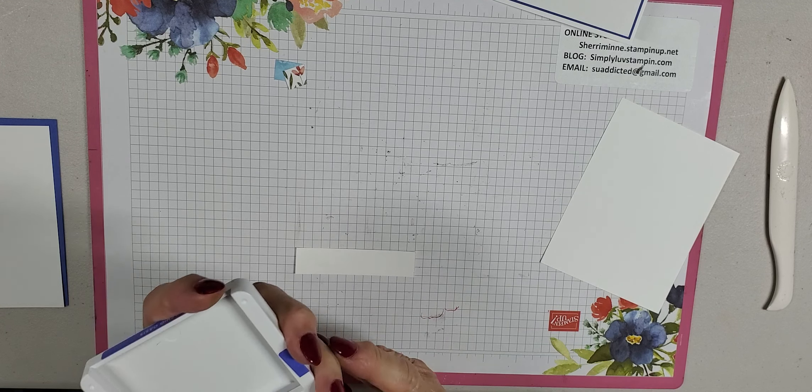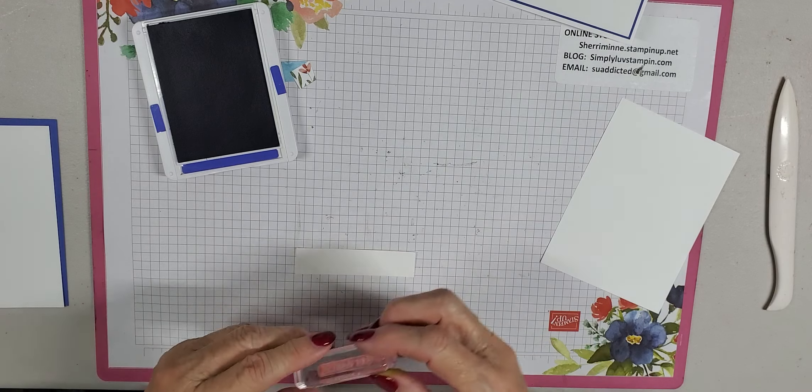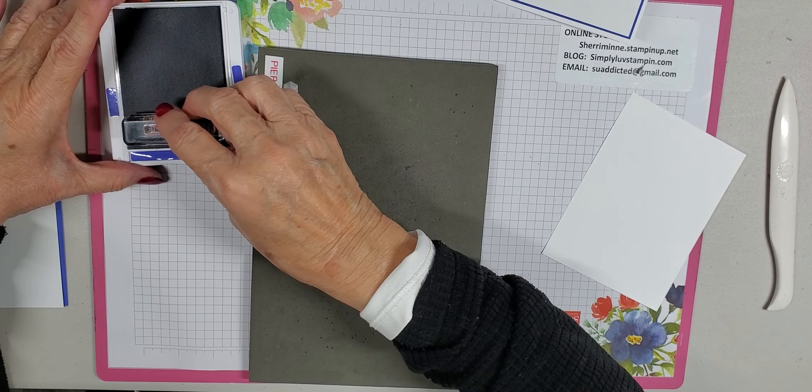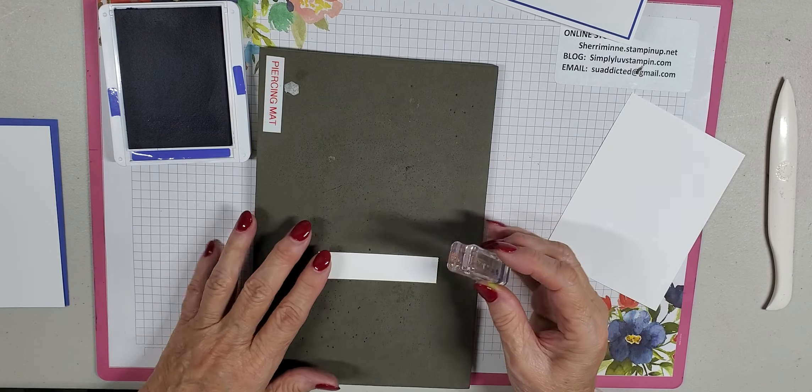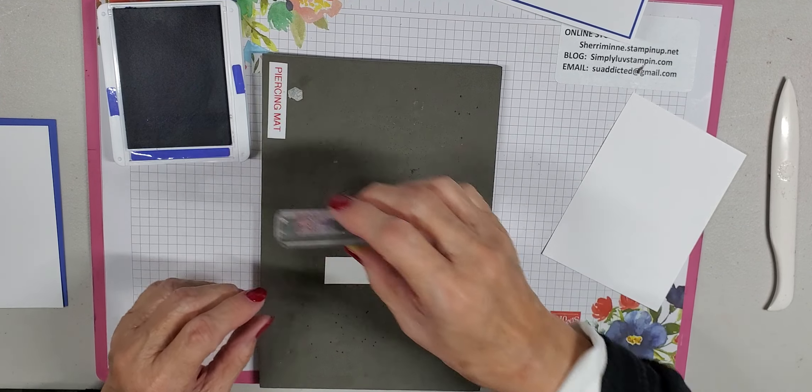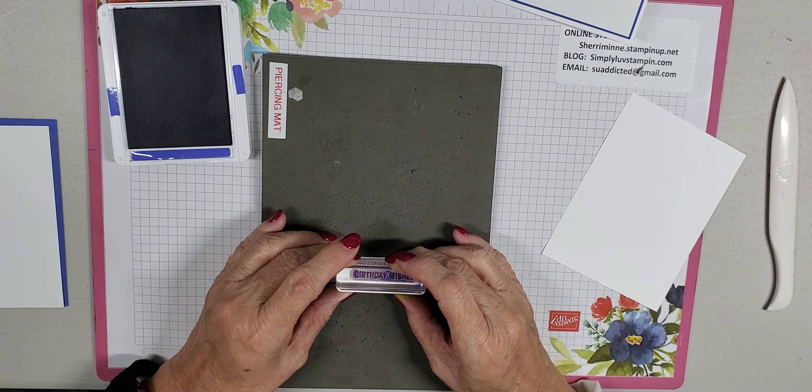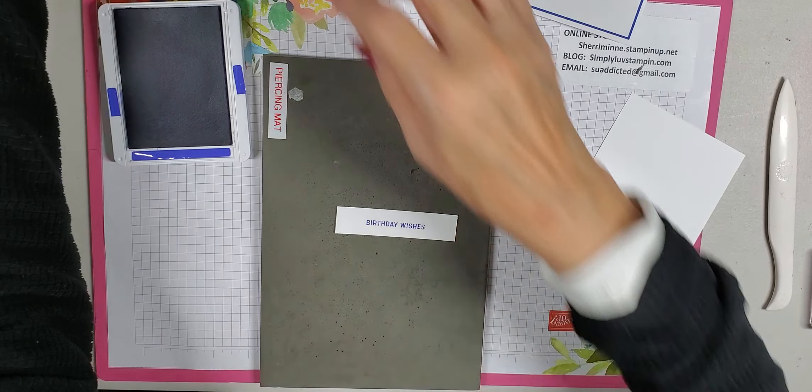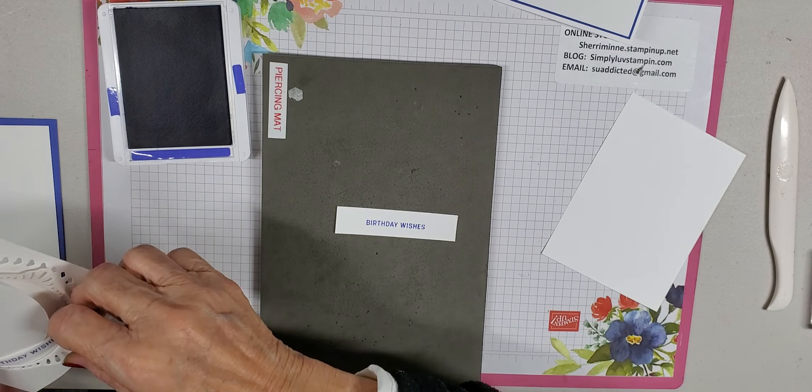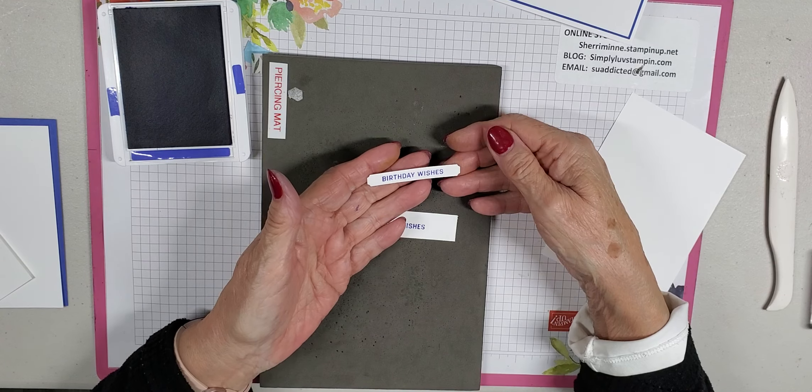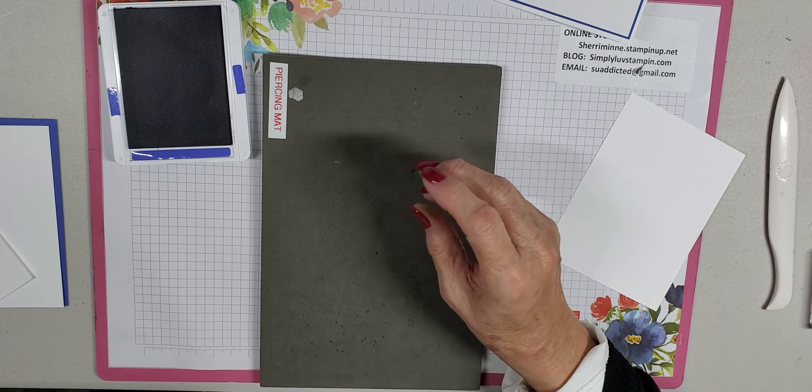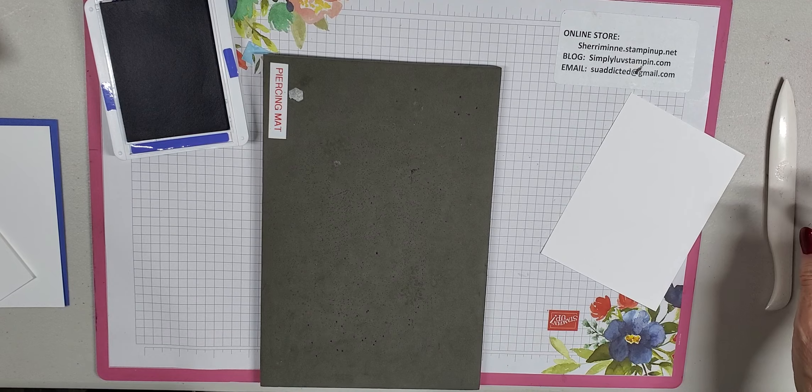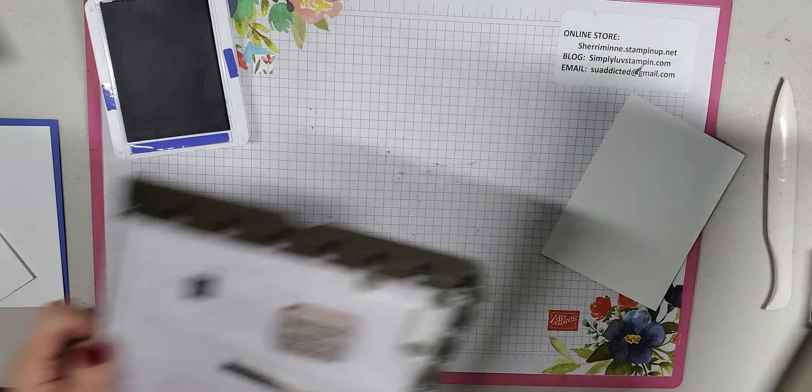And then I think what we'll do, we'll go ahead and work on our stamping. Get all our stamping done first. So first of all, we're going to take our Orchid Oasis. And that's what we're going to stamp our greeting on. And since this is a photopolymer stamp set, I'm using a little bit of an extra cushion under it. And we will get that stamped. And what's going to happen, you're going to take the framelit and cut it out, the little label framelit. And you'll end up with something that looks like that.